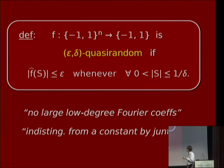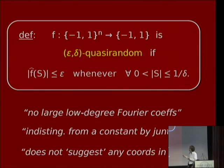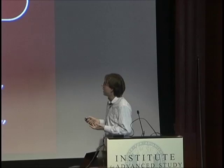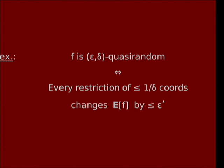This notion is similar to what Ben introduced in his talk, except that for him all the Fourier characters are created equal, whereas for us the Fourier characters are distinguished by their cardinality — we care about the small ones and less about the large ones. In the language Luca used, a function is quasi-random if it's indistinguishable from a constant by juntas, by characters of constant size. Equivalently, a quasi-random function's structure does not suggest any particular coordinate. The definition becomes stricter as epsilon and delta become smaller, giving a hierarchy. I'll be somewhat sloppy about these parameters — just think of them as really tiny constants.